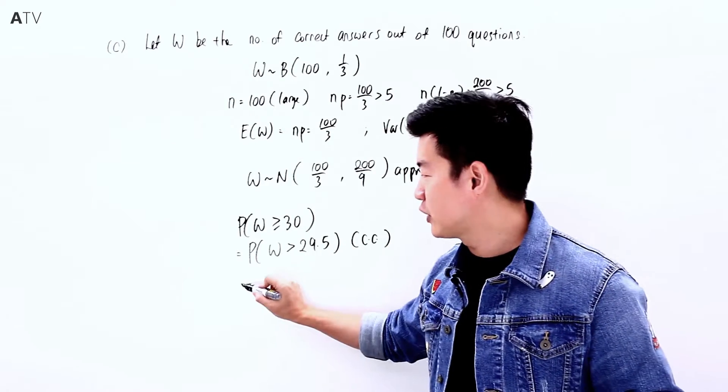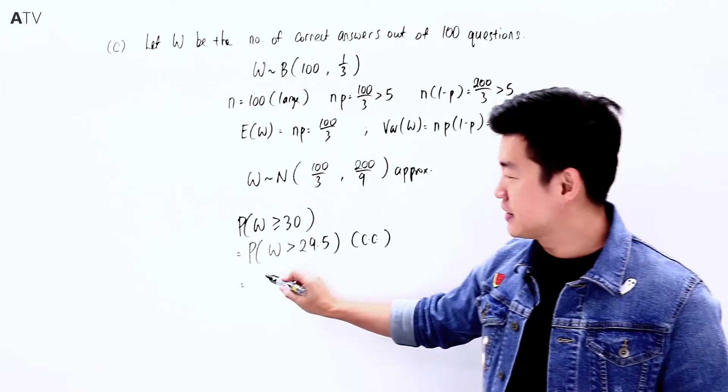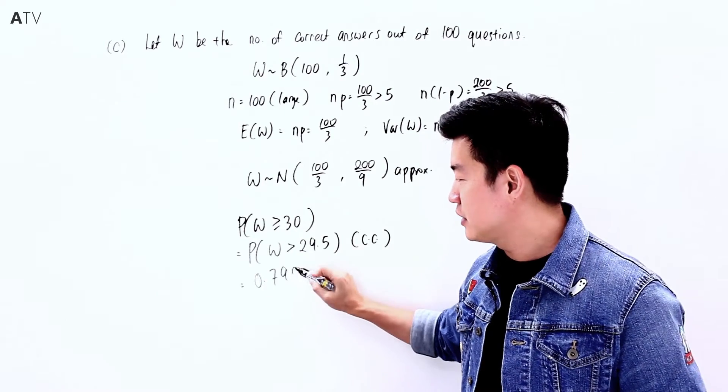Using the calculator with the continuity correction, we get 0.792.